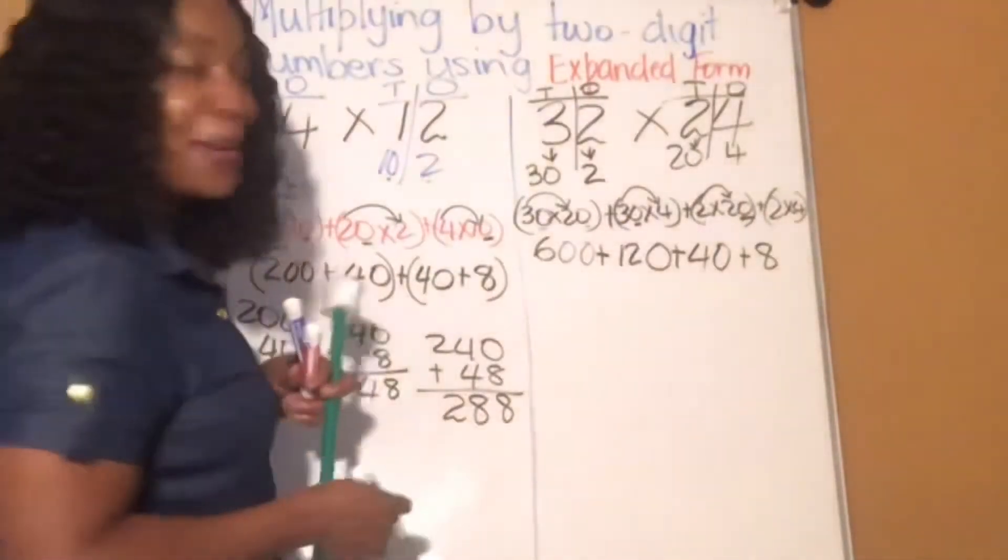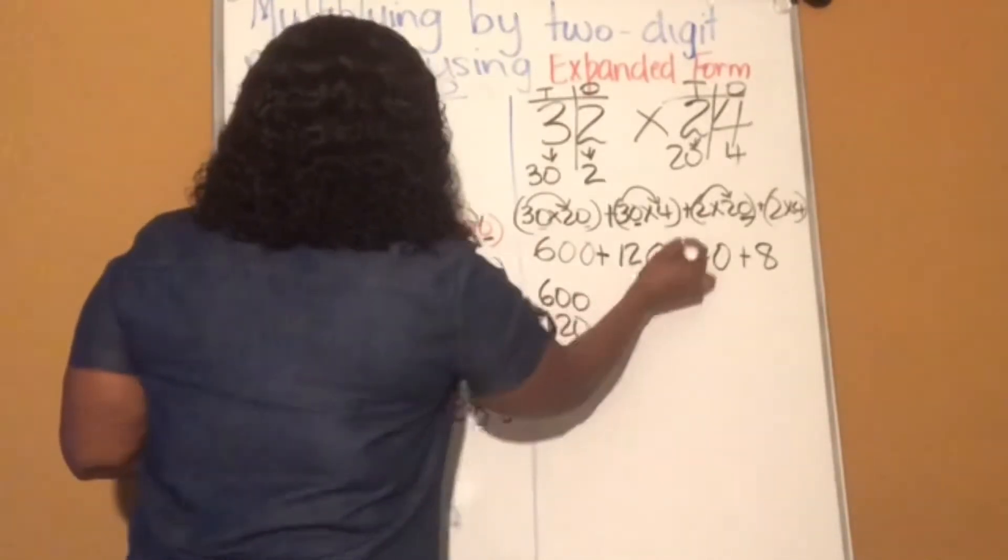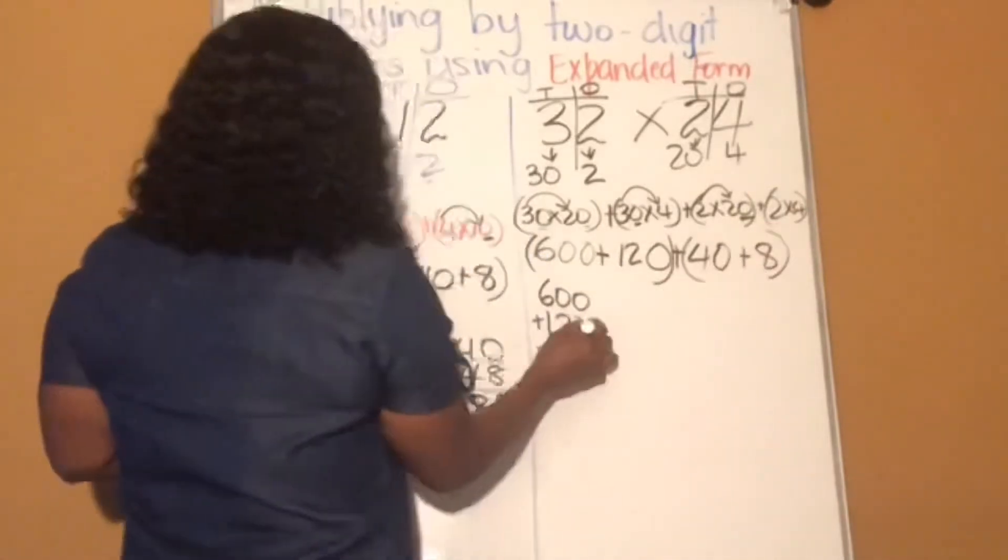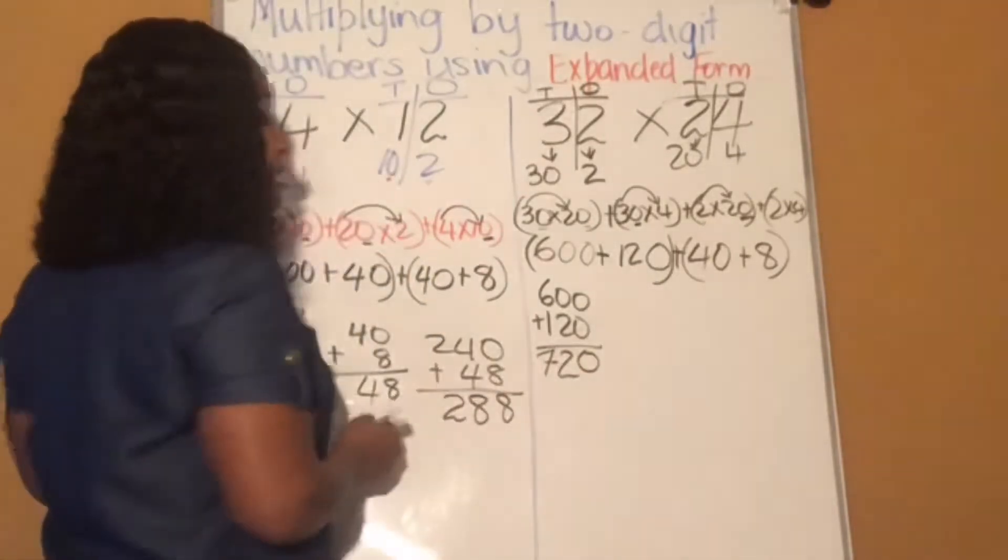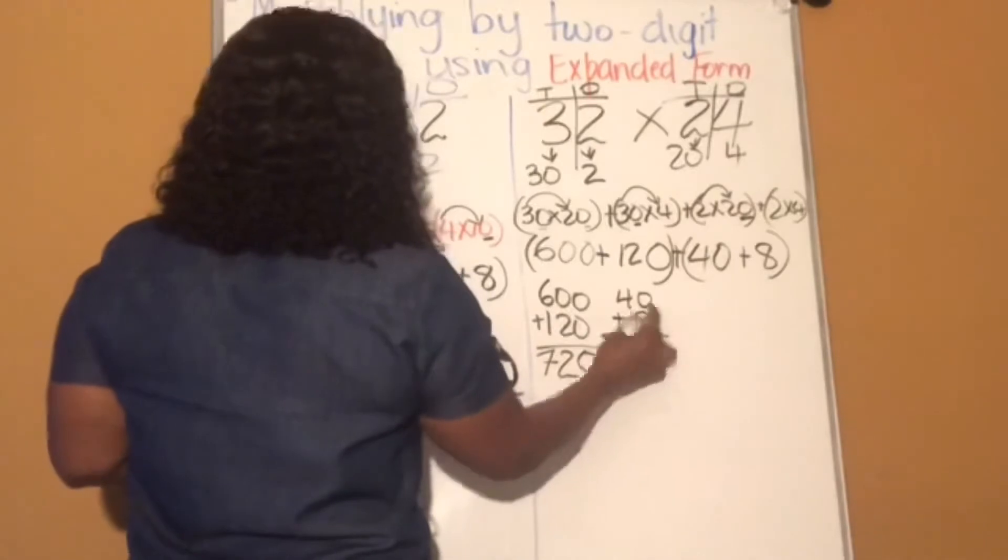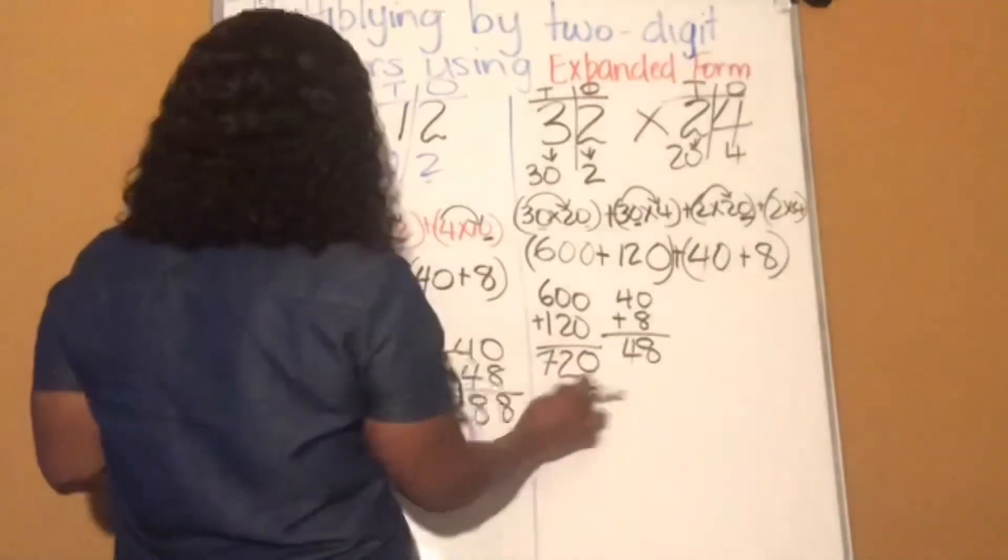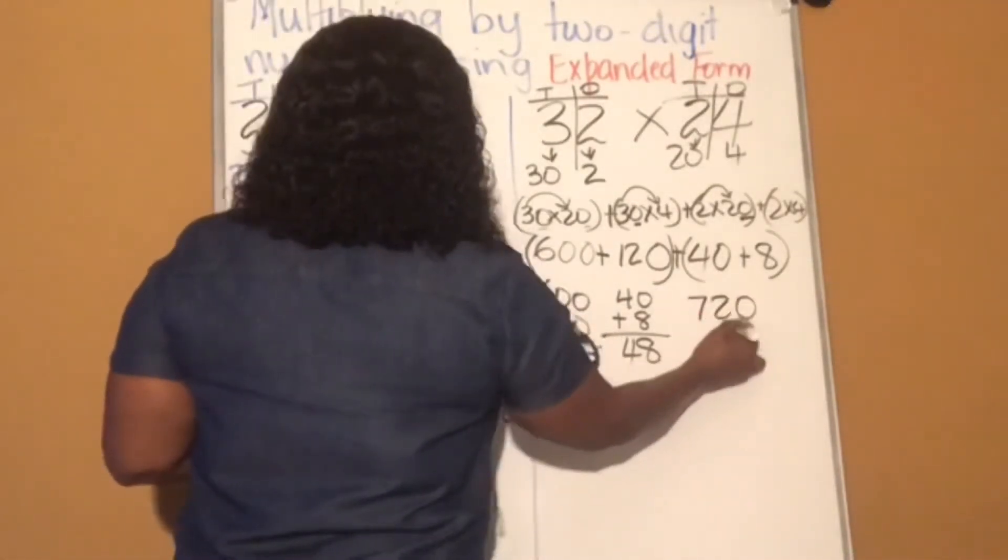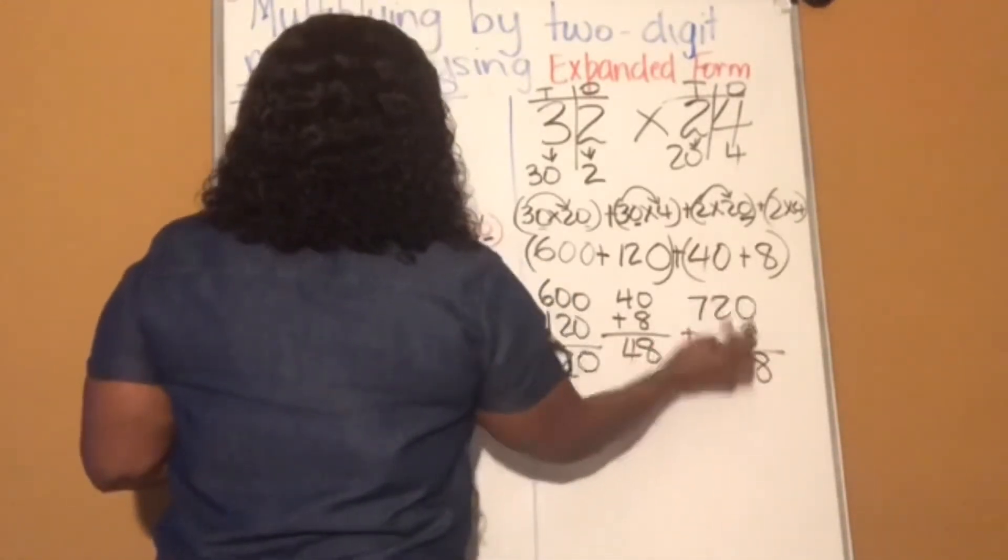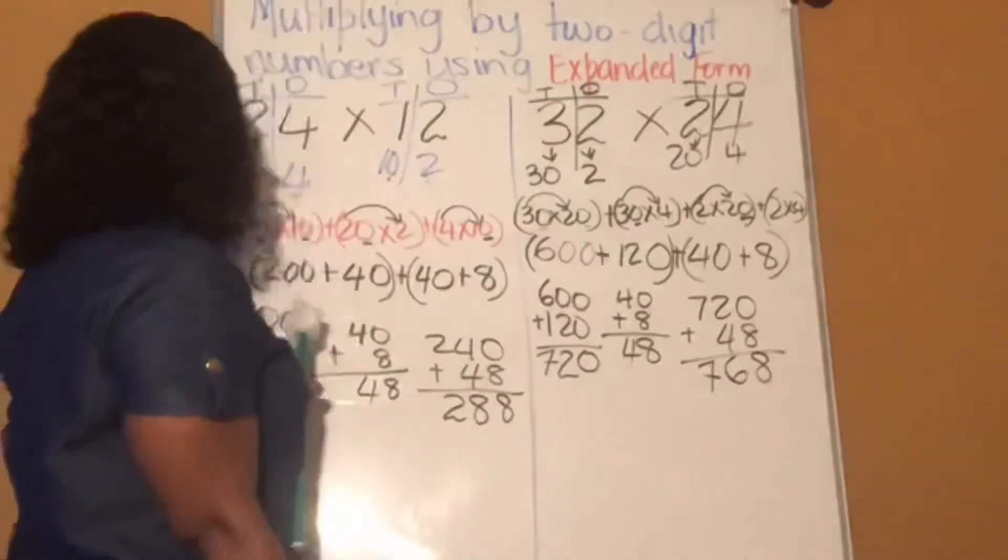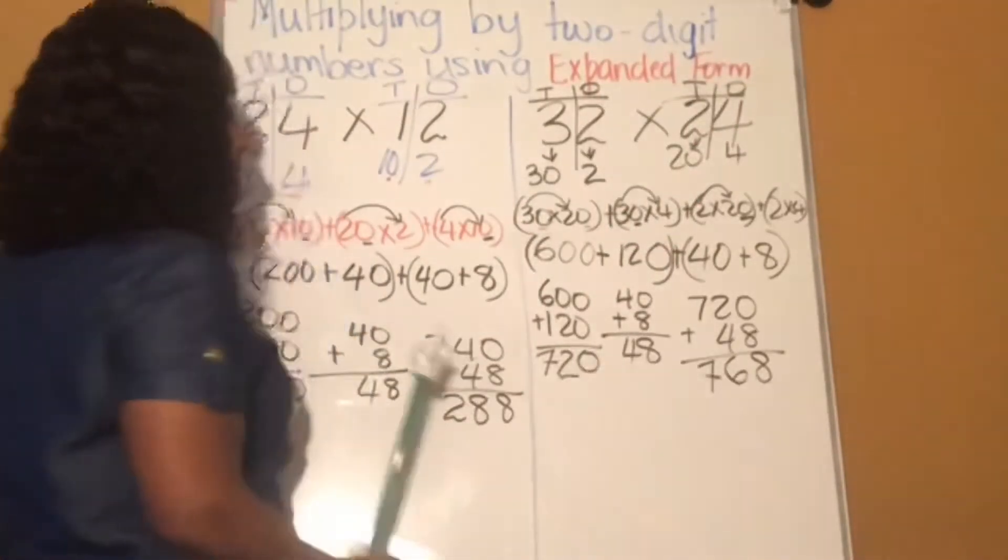Now it's time to add them all up. So 600 plus 120. You know we're going to add these 2 and then these 2. 0 plus 0 is 0. 2 plus 0 is 2. And 6 plus 1 is 7. Then 40 plus 8. 8 plus 0 is 8. And 4 plus nothing is 4. Now it's time to add both answers together. 720 plus 48. 8 plus 0, that's 8. 4 plus 2, that's 6. And 7 plus nothing is 7. So 32 times 24, that's 768.